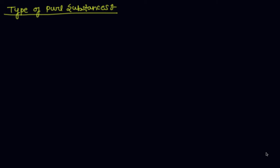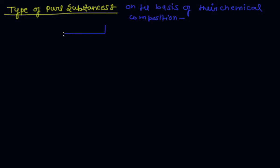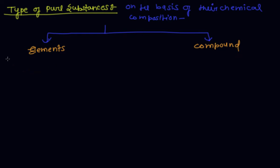On the basis of their chemical composition, pure substances can be classified either as elements or compounds. We will first discuss elements.